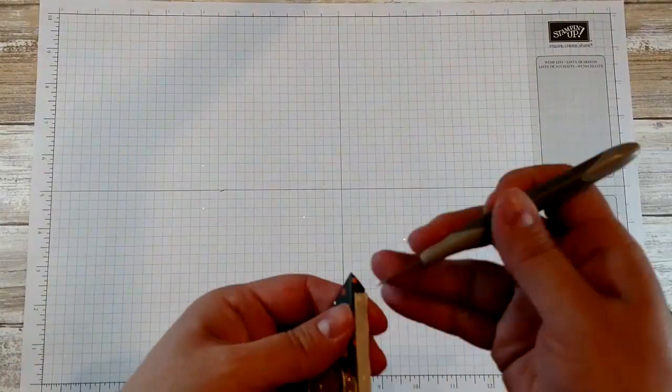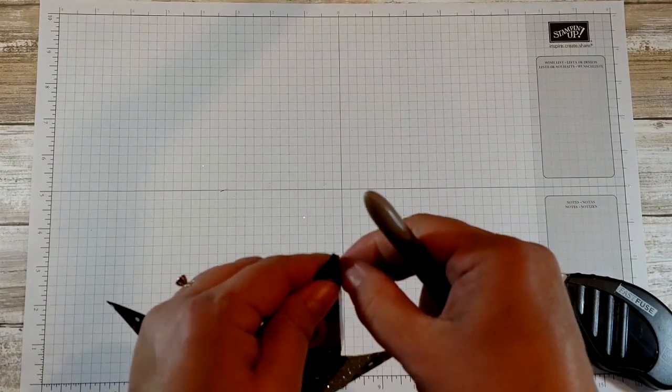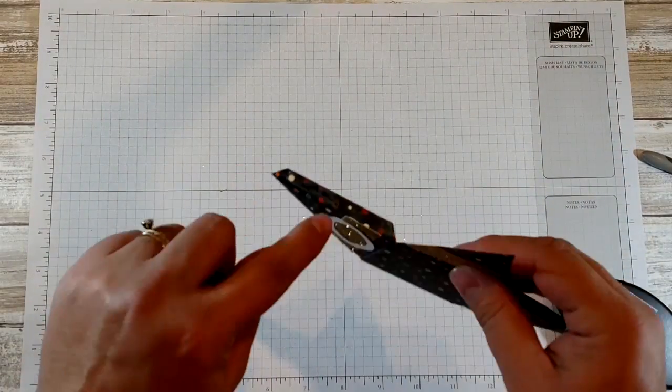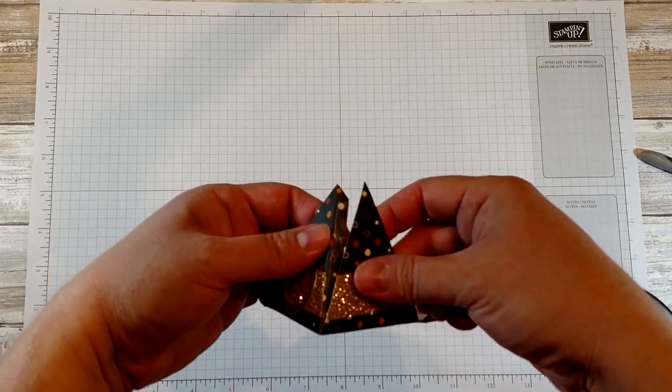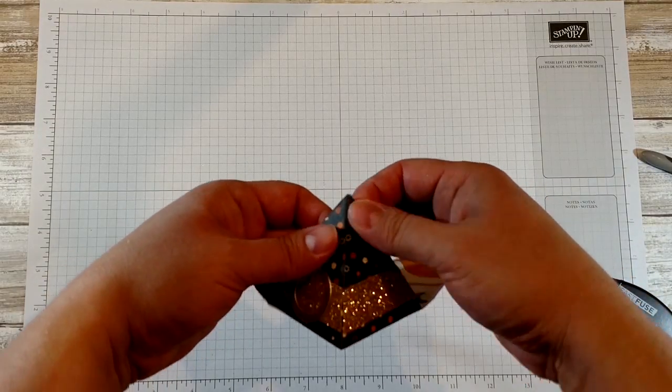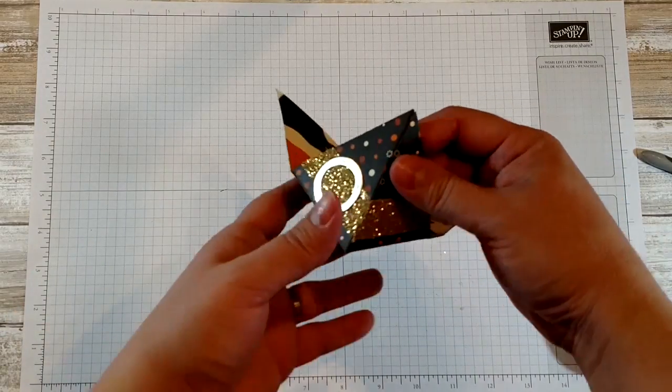So what I'm going to do is take the paper backing off of one of these tabs. You want to do one at a time because you don't want it sticking to places you don't want it to stick. And I'm going to take this tab and put it underneath this triangle here and you want to line the edges of the triangle with that score line and then squeeze it together.